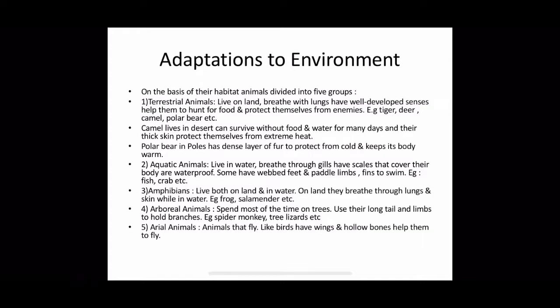First we will discuss about adaptations to environment. On the basis of their habitat, animals are divided into five groups. Number 1: terrestrial animals. They live on land, breathe with lungs, and have well-developed senses that help them hunt for food and protect themselves from enemies — like tiger, deer, camel, polar bear, etc. Camel lives in the desert, can survive without food and water for many days, and their thick skin protects them from extreme heat. Whereas polar bear in the poles has a dense layer of fur to protect from cold and keep its body warm.